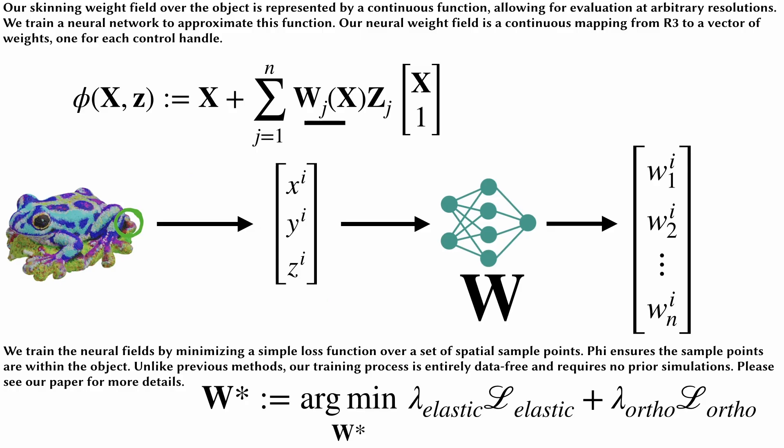Our skinning weight field over the object is represented by a continuous function, allowing for evaluation at arbitrary resolutions. We train a neural network to approximate this function. Our neural weight field is a continuous mapping from R3 to a vector of weights, one for each control handle. We train the neural fields by minimizing a simple loss function over a set of spatial sample points.